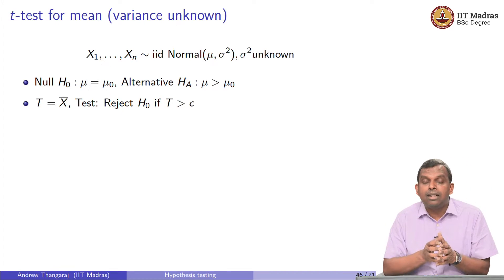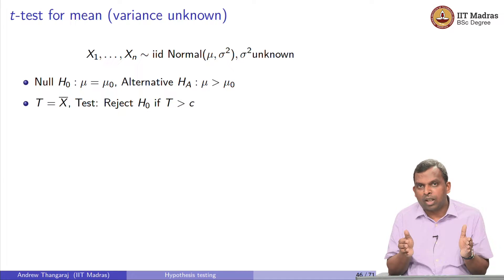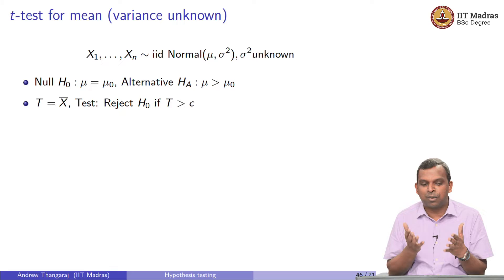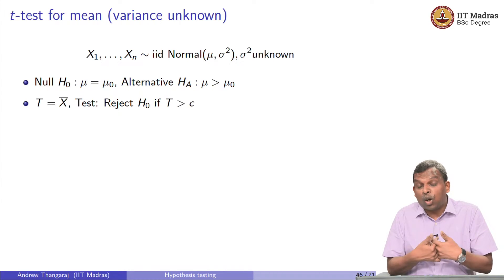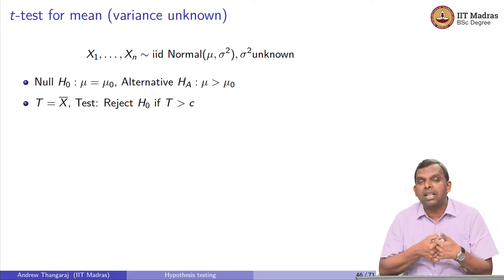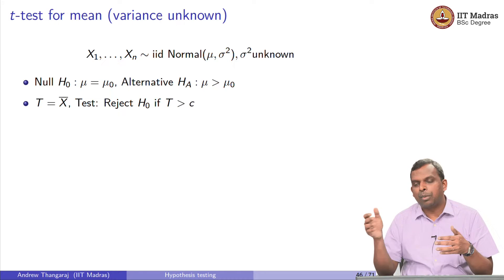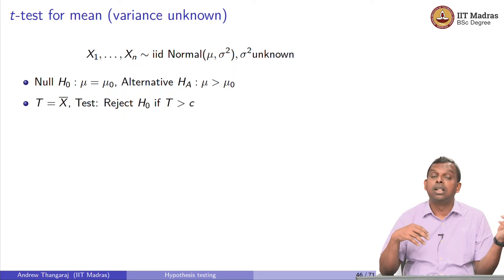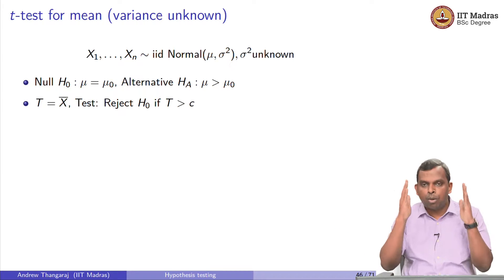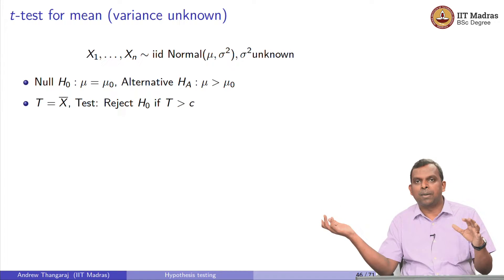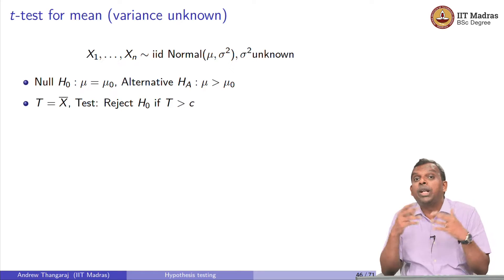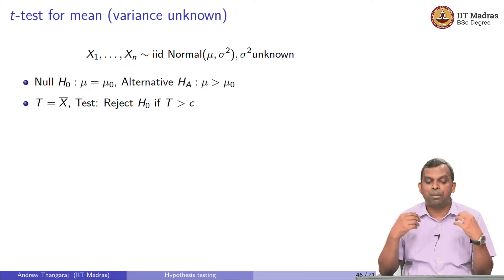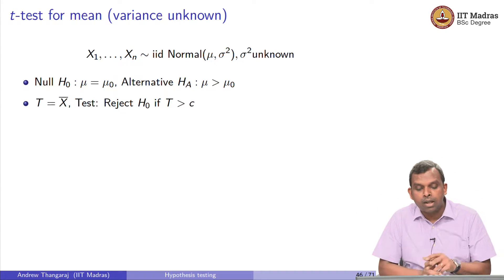My null hypothesis is mu equals mu naught. When you test for the mean, your null hypothesis is mu equals mu naught, your test statistic is x-bar, and your alternative is something about the mean. It could be right-sided — mu greater than mu naught — left-sided — mu less than mu naught — or two-sided, such as mod of mu minus mu naught greater than something.